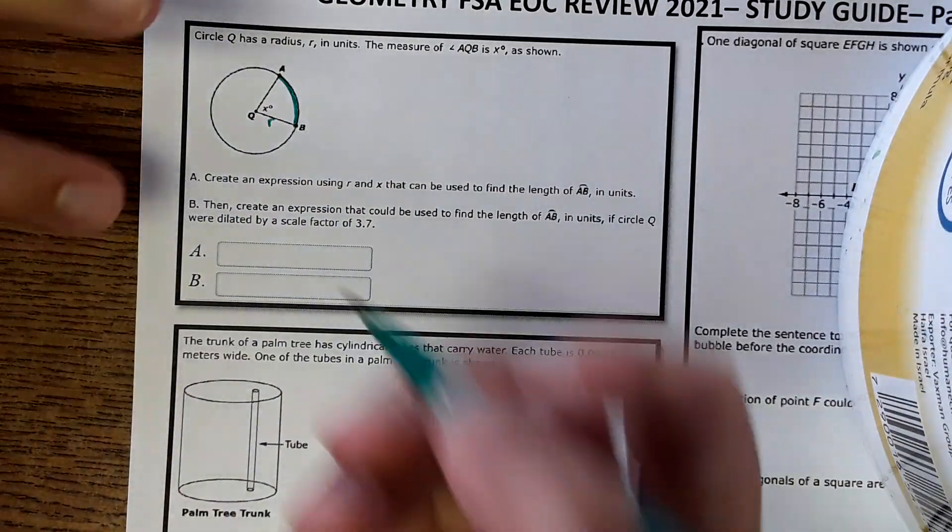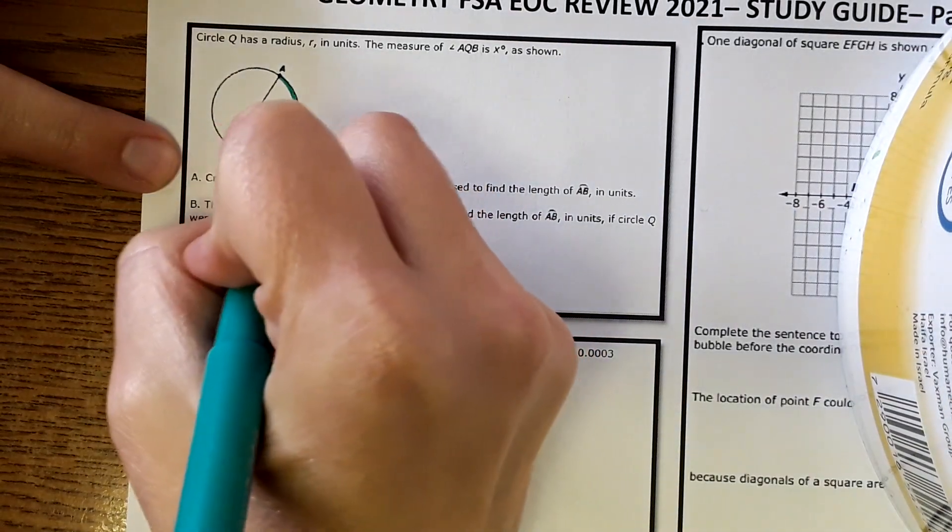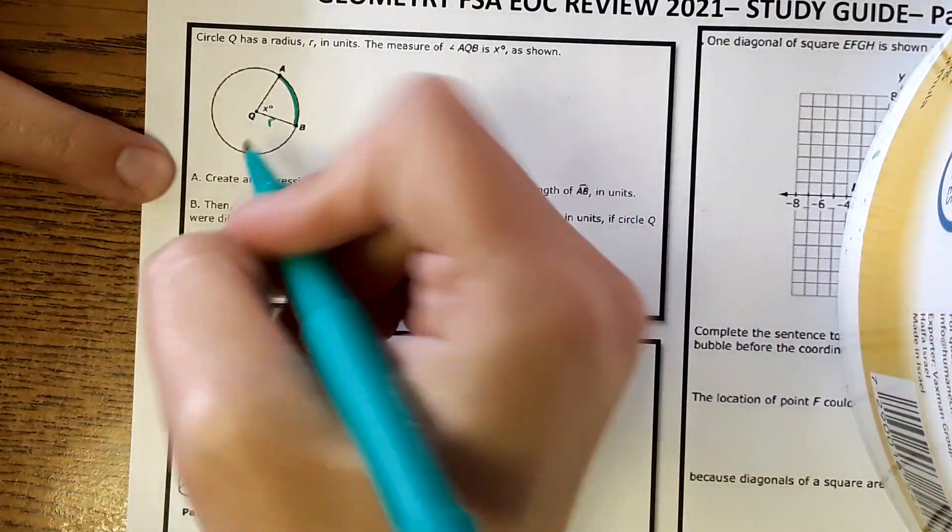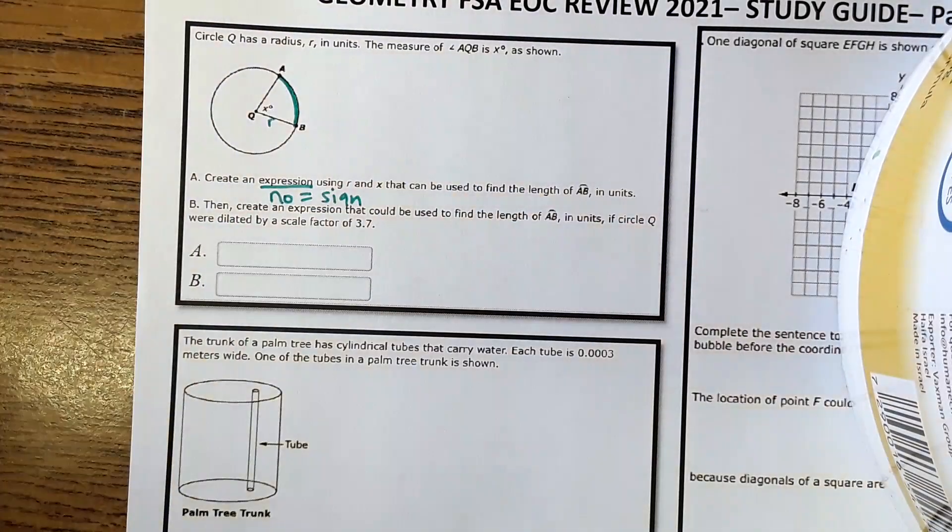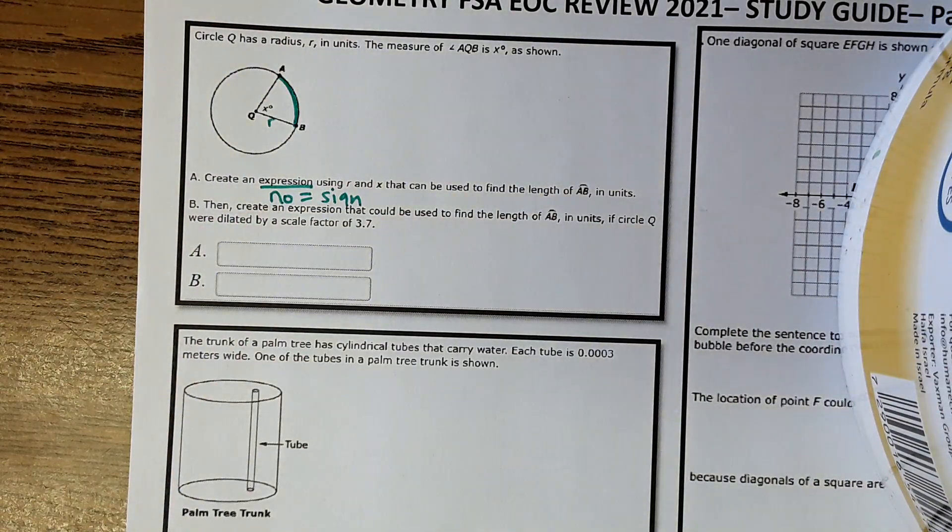Something to note here that might not seem like an important piece, but it says expression. An expression has no equal sign. An equation would have an equal sign, just FYI.